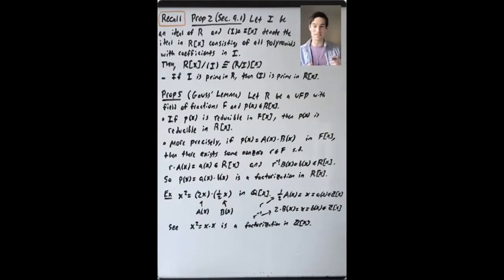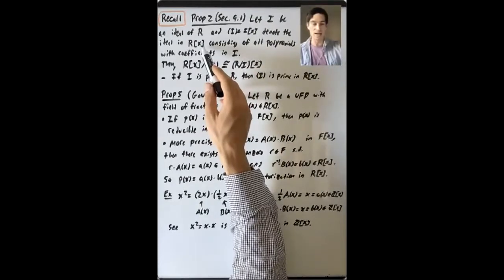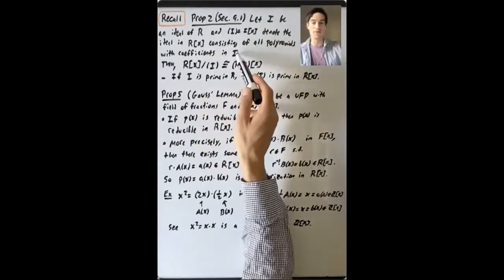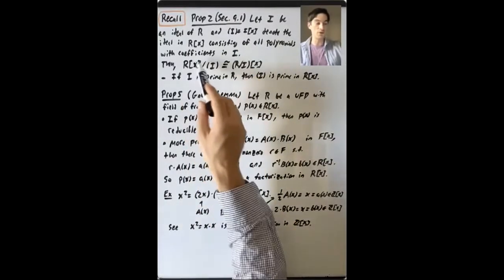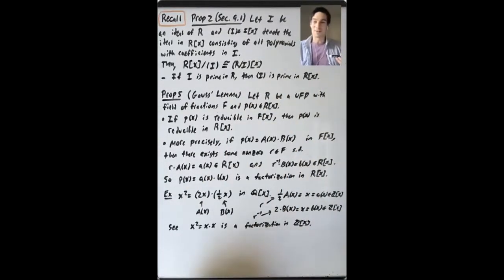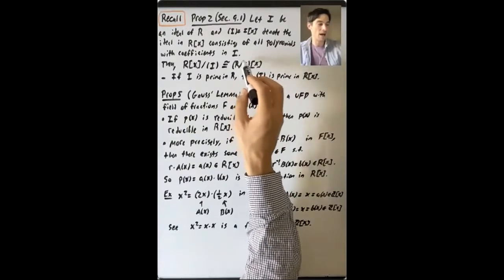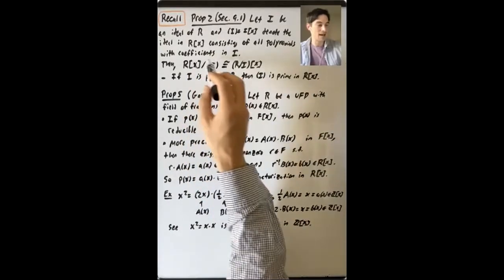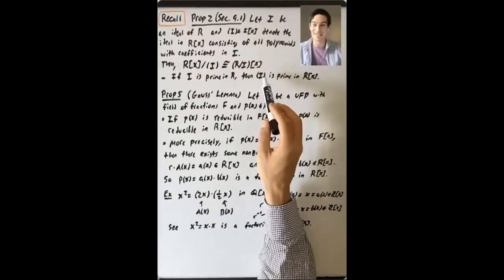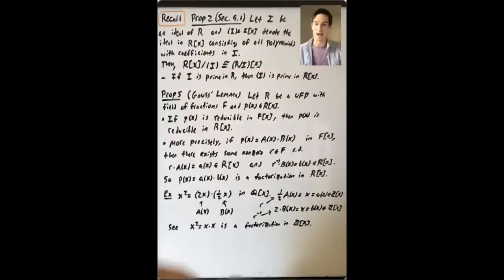We'll next recall something from the previous lecture — Proposition 2 in section 9.1 — which gives a relation between ideals in R and a certain kind of ideal in R[x]. If I is an ideal in R, let I·R[x] denote the ideal in R[x] consisting of all polynomials whose coefficients all lie in I. Then R[x] modulo this ideal is isomorphic to (R mod I)[x]. One consequence: if I is prime in R, then R mod I is an integral domain, so (R mod I)[x] is also an integral domain, and therefore I·R[x] is prime in R[x].